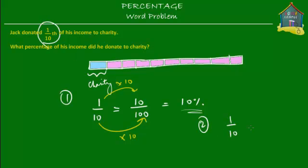Method two: take the fraction 1/10 and multiply it by 100 percent to convert it to a percentage. Simplify by canceling zeros, and you are left with 10, which equals 10 percent. Whether you use method one, method two, or the block diagram, you always arrive at the same answer: 10 percent.